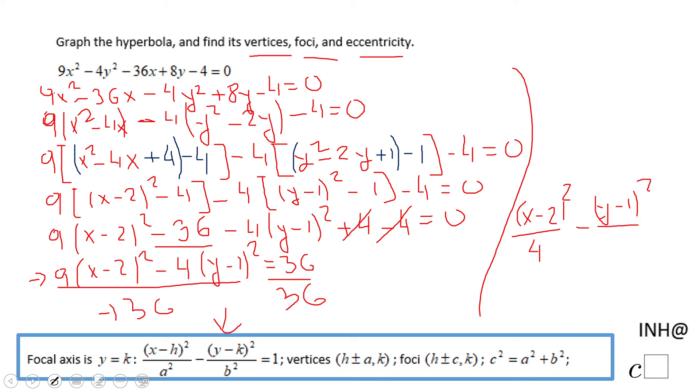And this 4 goes into this 36, 9 times, and 36 goes into 36, 1 time. So this form here is the one we need for answering the vertices, foci, and eccentricity.